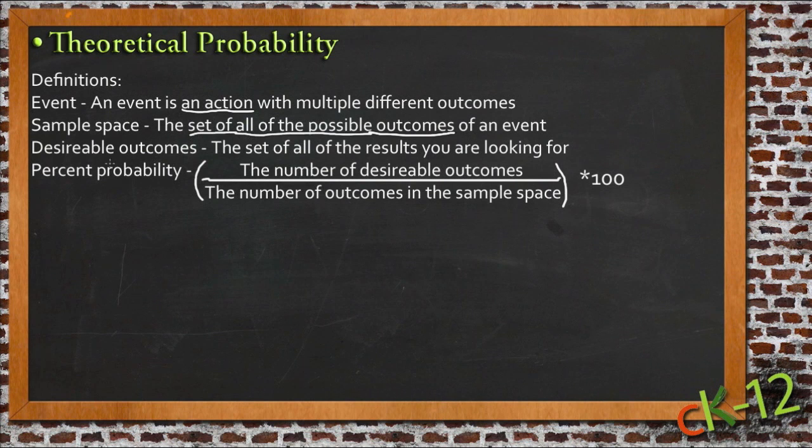Now the desirable outcomes, desirable outcomes is the term that we use to describe the results we're looking for. So again, with the die, for instance, if we're looking to see what the chances of rolling a 2 are, then the desirable outcomes would be a 2 in that situation. That's the number we're looking for, the thing we're looking to happen.